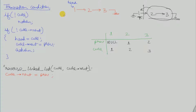First, I will take a previous node pointing to null and a current node pointing to the head pointer, and then I will slide one node at a time. The first termination condition is: if not current, then return — meaning if the linked list is empty we will not do anything, since we cannot reverse an empty linked list.